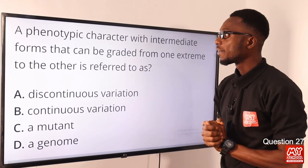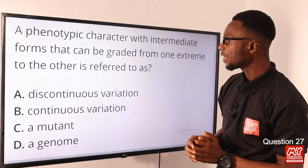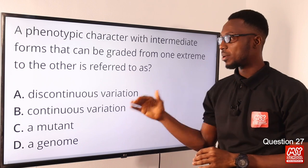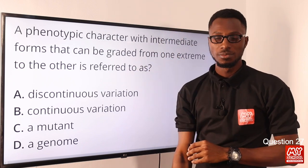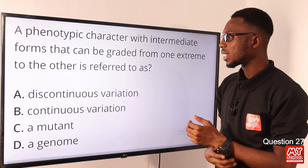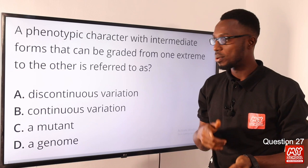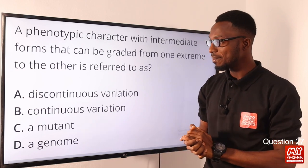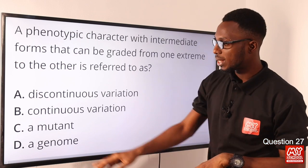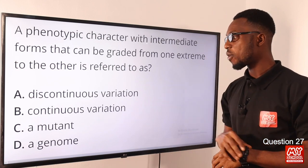Question 27: A phenotypic character with intermediate forms that can be graded from one extreme to the other is referred to as continuous variation. Phenotypic means physical appearance. Examples include height — very tall, very short — and weight, from obesity to slim. Continuous variation has no extreme size; there is a range. Mutation is the alteration or change in the structure of the gene. Genome is all the genetic information of an organism. The correct option is option B for continuous variation.